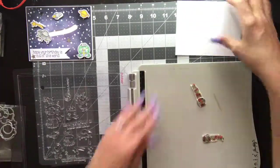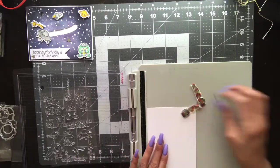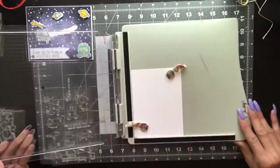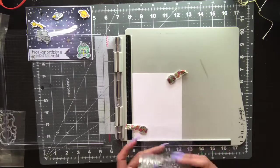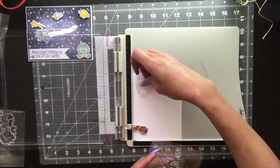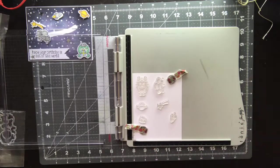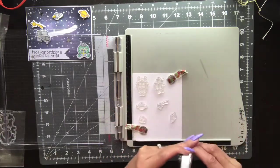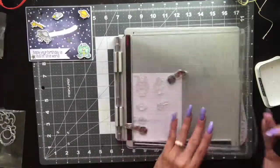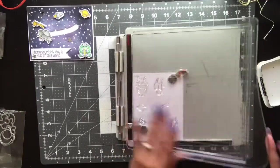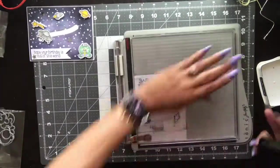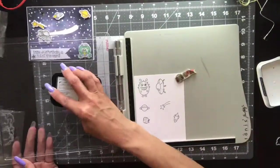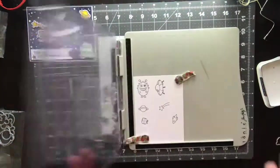I'm gonna take those stamps and put them in my Tonic Studios stamping platform using a spare piece of Neenah Solar White cardstock of 110 pounds. I'm laying down the stamps in no particular order and I'm going to use Memento Tuxedo Black ink to ink those images onto the white paper.